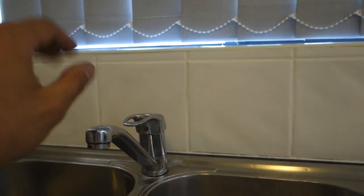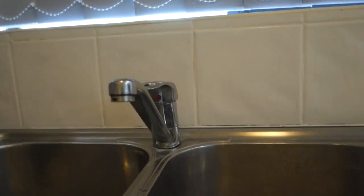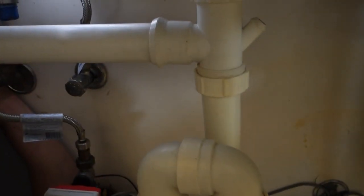So first thing you want to do is make sure you've got your tap sitting nice and straight before we tighten this on. Then we go underneath the sink.